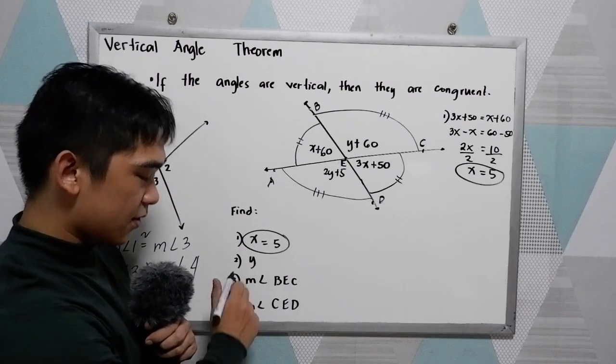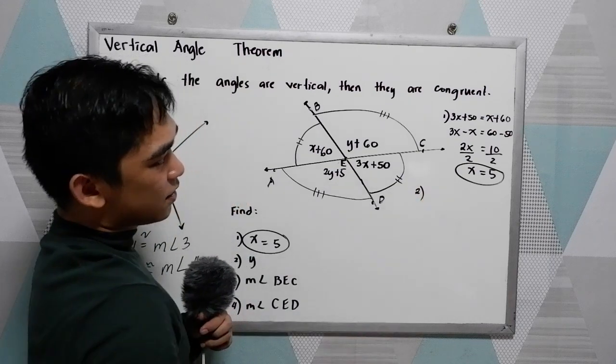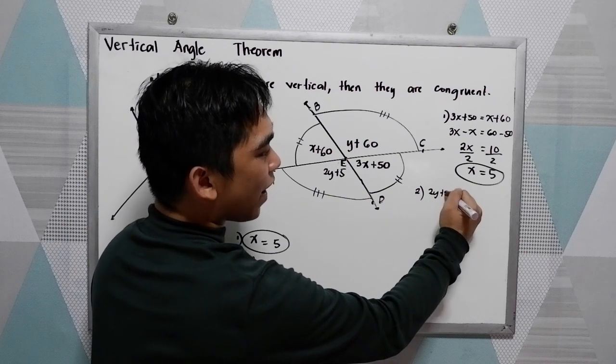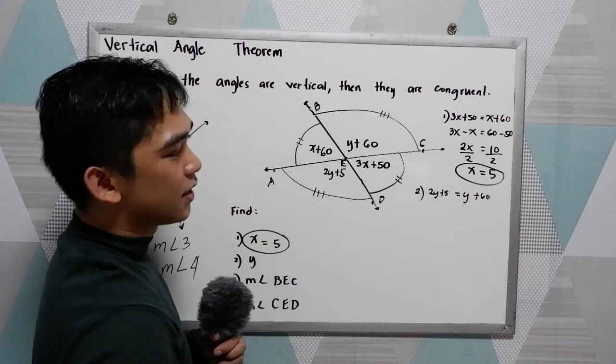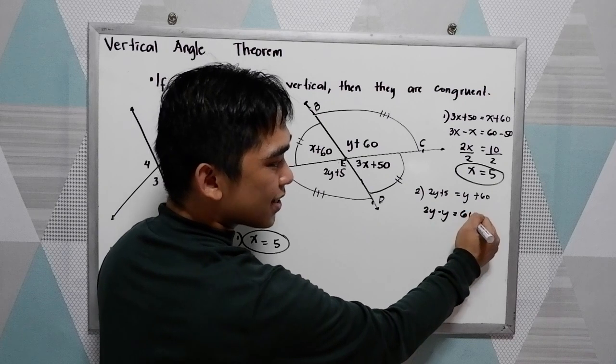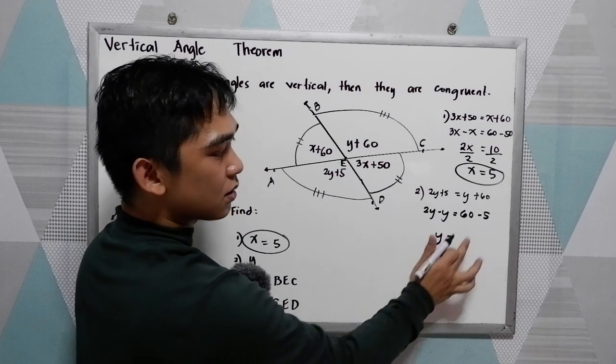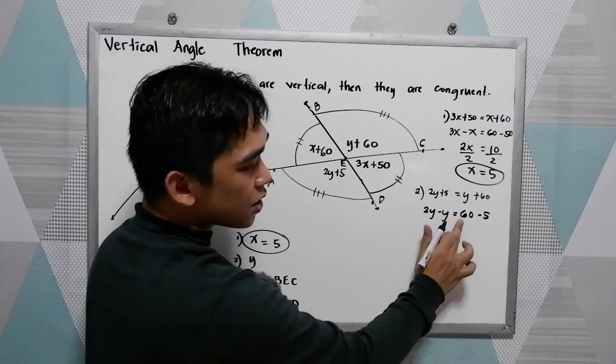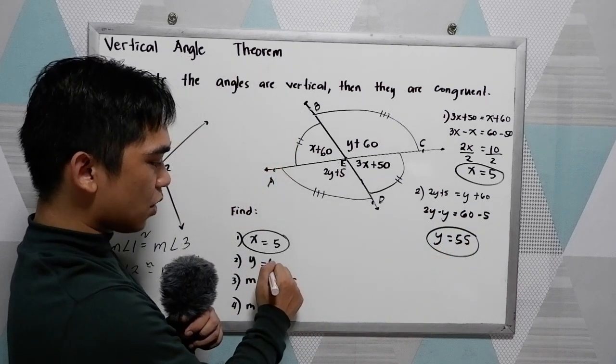Next, number 2, y. Applying the property, 2y plus 5 is equal to y plus 60. Now, solve for y. 2y minus y is equal to 60 minus 5. We have y, because 2y minus y is simply y, or 1y, equal to 60 minus 5, that is 55. So, y is equal to 55.